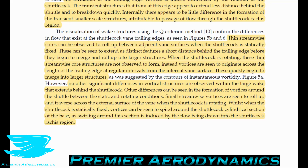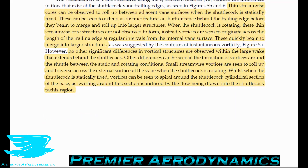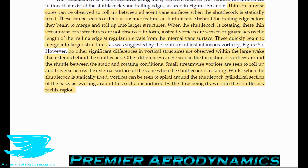No other significant differences in vortical structures are observed in the large wake behind the shuttlecock. However, small streamwise vortices roll up and traverse across the external vein surface when rotating, whereas for the statically fixed condition, vortices spiral around the cylindrical section of the base — swirling induced by the flow being drawn into the shuttlecock vein section.